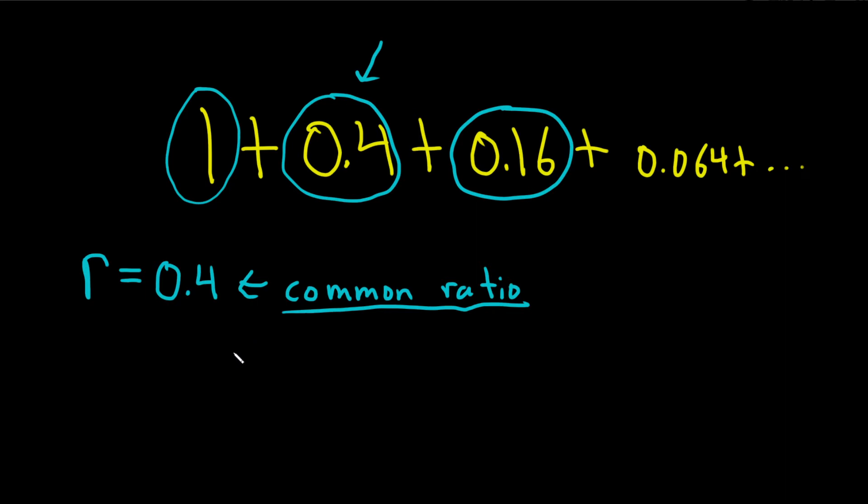And now we can use something called the geometric series test, or G.S.T. The geometric series test says if the absolute value of r is less than 1, then our series converges. And if the absolute value of r is greater than or equal to 1, then our series diverges.